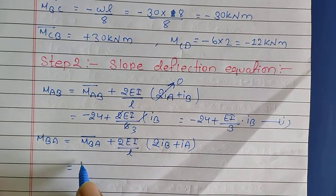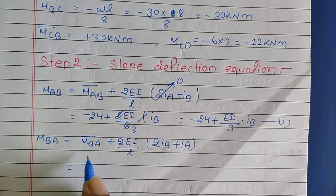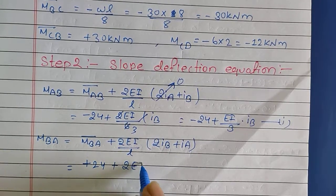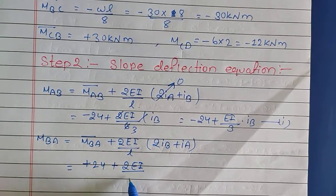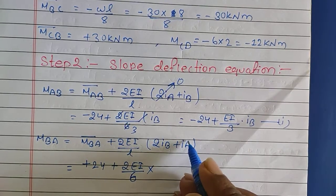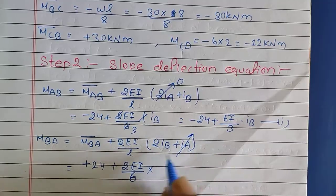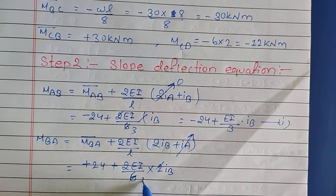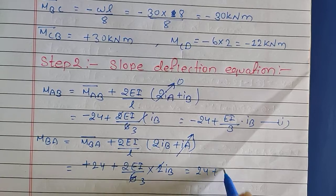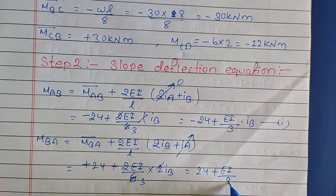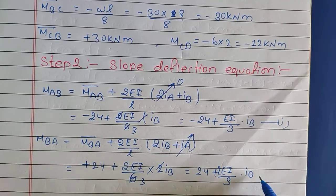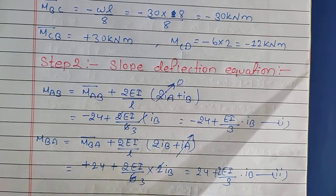Similarly, for MBA: MBA = M̄BA + (2EI/L)(2θB + θA). With θA = 0 and L = 6 m, this gives MBA = +24 + (2EI/3)θB. This is equation 2.